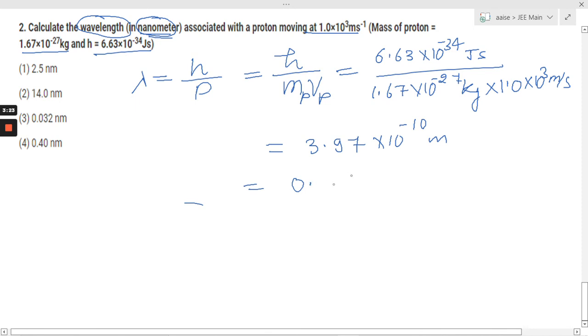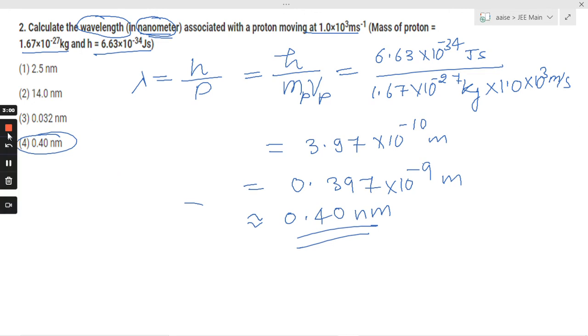to become 0.397 × 10⁻⁹ meters, so approximately we can say it is 0.40 nanometers. So we got option 4, that is the correct answer. Hope you understand, and thanks for watching. Have a good day.